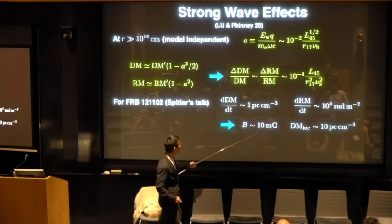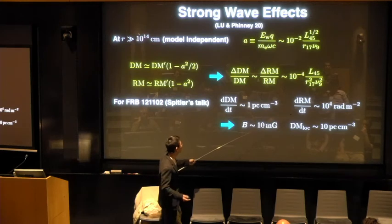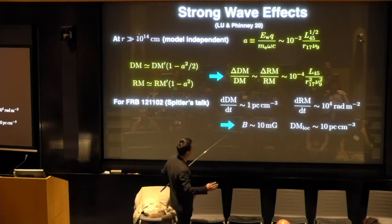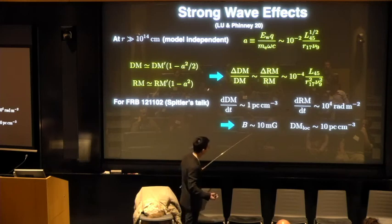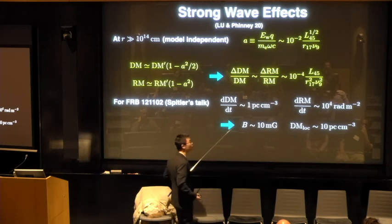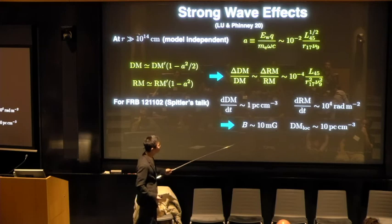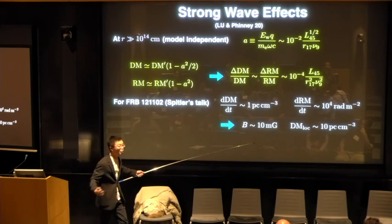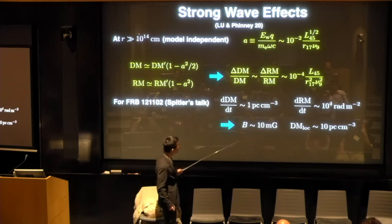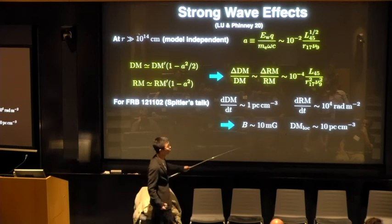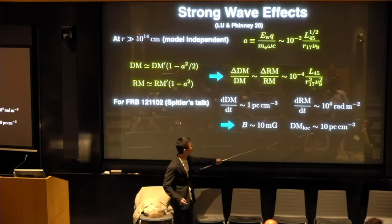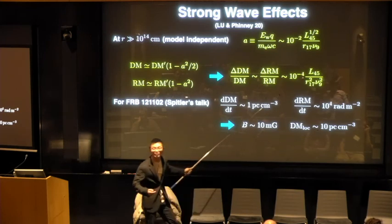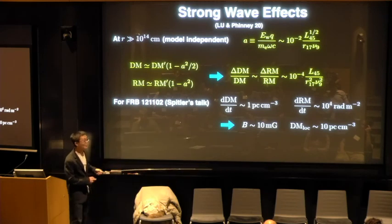Also from the 121102, from Laura's talk, one can roughly estimate if this DM and RM change are due to the same cloud. You can do the ratio. Dimensions are wrong. I mean, yeah. Yeah, I'm sorry, but per year, sorry, per year. You do the ratio of these two, you get a magnetic field, 10 milligauss, quite high, but not crazy, I would say. And from the RM, which is 10^5, divided by this, you get a local DM. So there is some amount of local DM. The amount of, you expect 10^-3 of modulation due to strong wave effects.